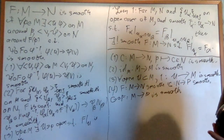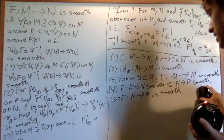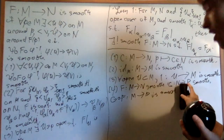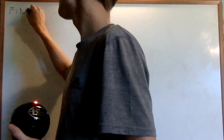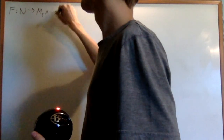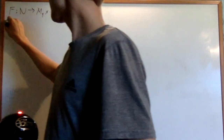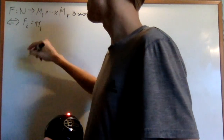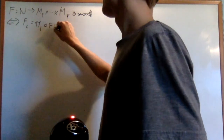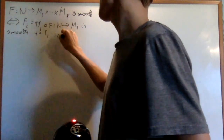Now one more equivalent definition and some easy consequences. A map F from N into a finite product M_1 × … × M_K is smooth if and only if F_i, the i-th component (the i-th projection composed with F) from N into M_i, is smooth for i = 1 to K. So F is smooth if and only if its components are smooth.